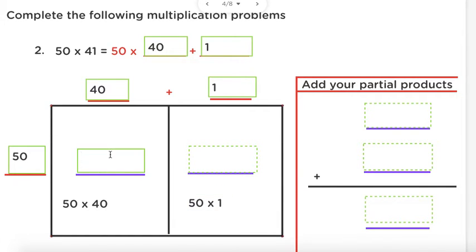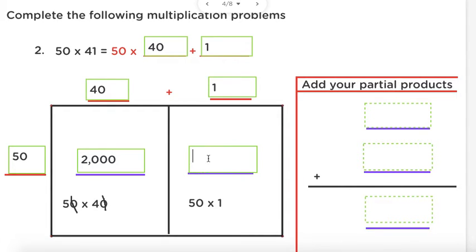Alright, 50 times 40 — I don't know 50 times 40, but I do know 5 times 4, which is 20. In order to solve 50 times 40, I took away one zero from 50 and one zero from 40 — so how many zeros did I take away altogether? Yes, 2 zeros. Put those 2 zeros back in, and don't forget your comma if you have more than 2 zeros — 2,000.